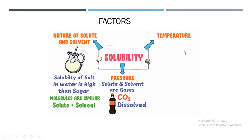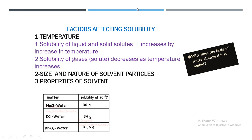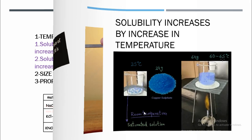The third factor is temperature. Solubility of liquid and solid solutes increases by increasing the temperature, whereas it is opposite in the case of gases. Here you can see different solubilities at the same temperature for different substances dissolved in water. KCl can be dissolved up to 34 grams, but NaCl (table salt) can be dissolved up to 36 grams in 100 grams of water, showing that different substances have different solubilities.